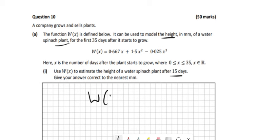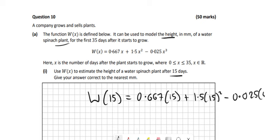We just find W of 15, so that's 0.667 times 15 plus 1.5 times 15 squared minus 0.025 times 15 cubed. So that gives you 263 millimeters, to the nearest millimeter.